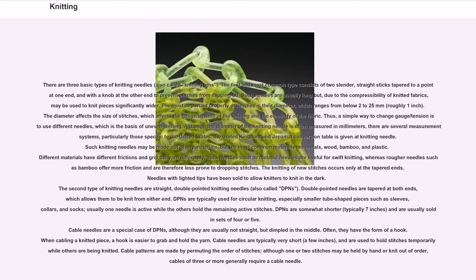Slick needles such as metallic needles are useful for swift knitting, whereas rougher needles such as bamboo offer more friction and are therefore less prone to dropping stitches. The knitting of new stitches occurs only at the tapered ends. Needles with lighted tips have been sold to allow knitters to knit in the dark.